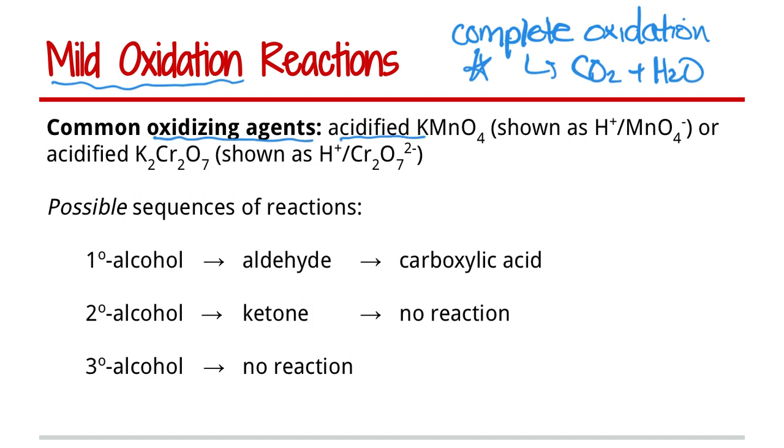The first is acidified potassium permanganate and the other is acidified potassium dichromate. Typically they're shown as H+ with MnO4- or H+ and Cr2O7 2-. As the catalyst in this reaction, the potassium doesn't really do anything, it's just a spectator ion.